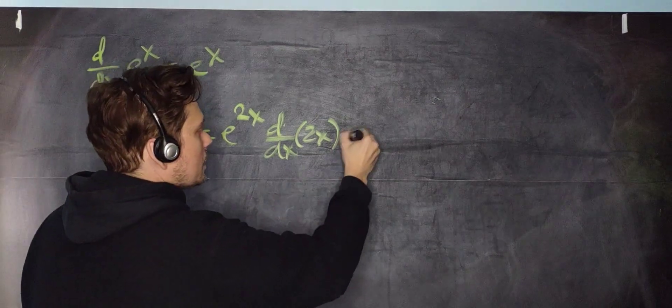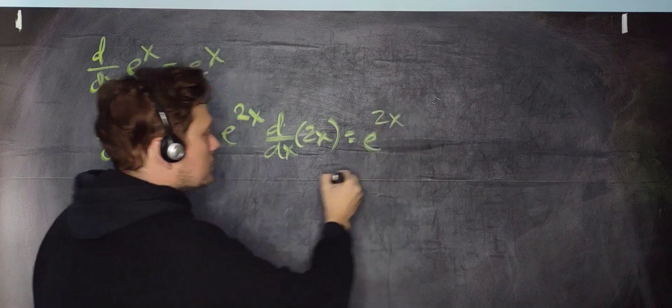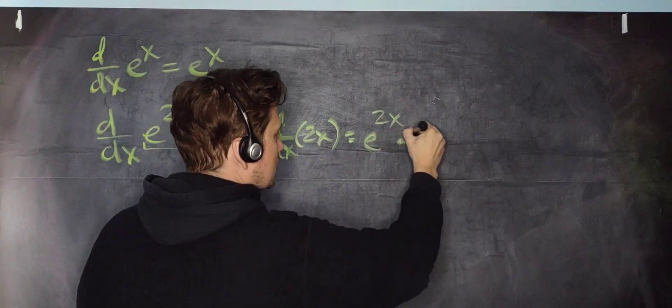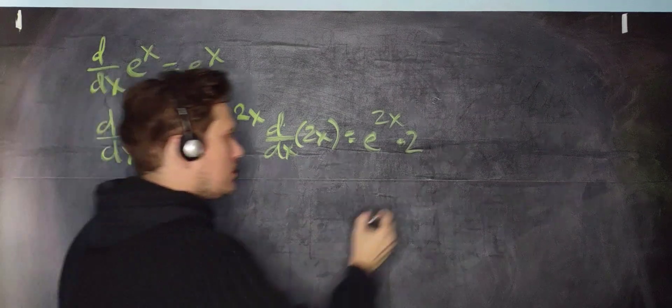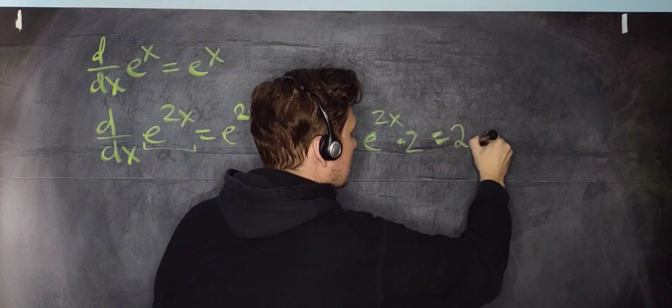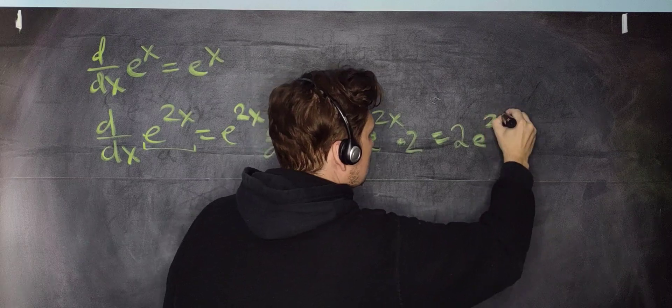And once you complete that process, what do you get? Well, you're going to get e to the 2x multiplying 2, right here. And then that 2 can be placed out front. That's the conventional way of writing it. So it becomes, therefore, 2e to the 2x.